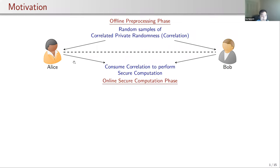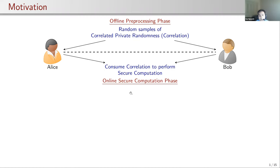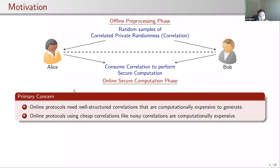A prominent pattern in secure computations is the pre-processing model, which has produced some successful stories. In this model there are two phases: an offline phase and an online phase. The offline phase distributes correlated private randomness to parties, and this step is independent of the functions and inputs of the secure computation performed in the online phase. The online phase is fast and can achieve information-theoretic security.